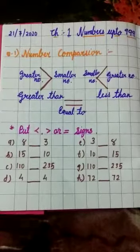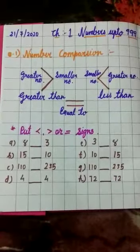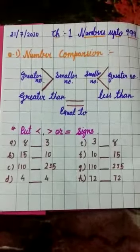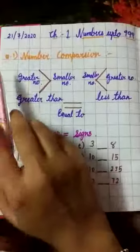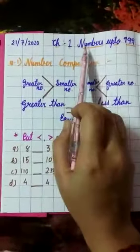After completing number names from 1 to 100, you have to start writing chapter number 1, Numbers up to 999. In the margin, you have to write down today's date, then write chapter number 1.